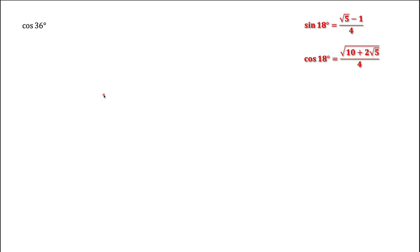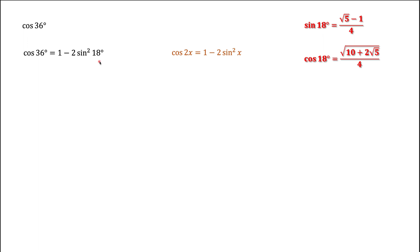Now let's go for 36 degrees — first, cosine of 36 degrees. We know 36 degrees is twice 18 degrees, so we can use the double angle formula. Here's the formula for cosine of a double angle expressed through sine of x. We know what sine of 18 degrees is, so plugging it in gives us cosine of 36 degrees, and that's the final answer.